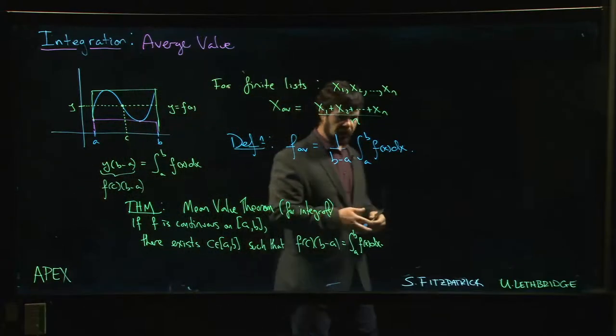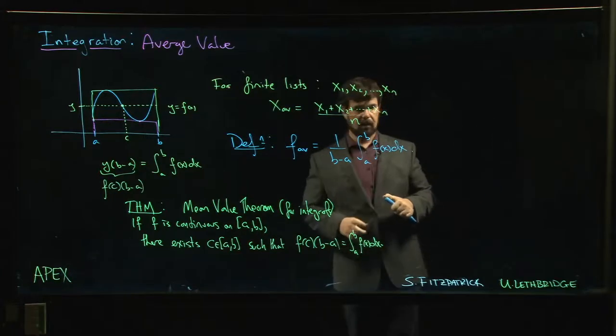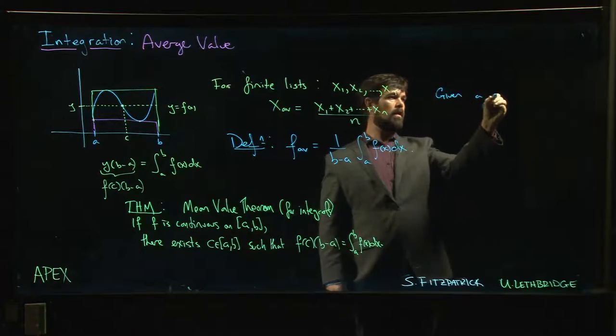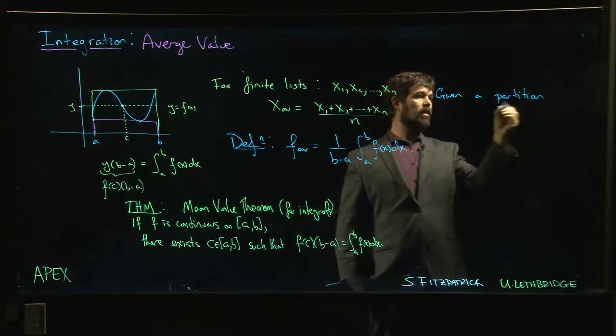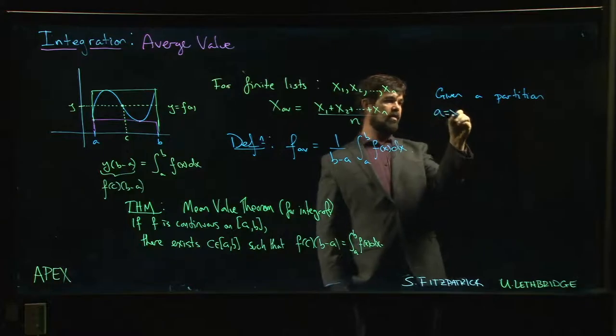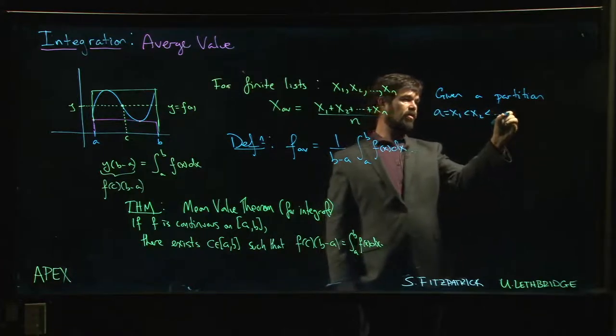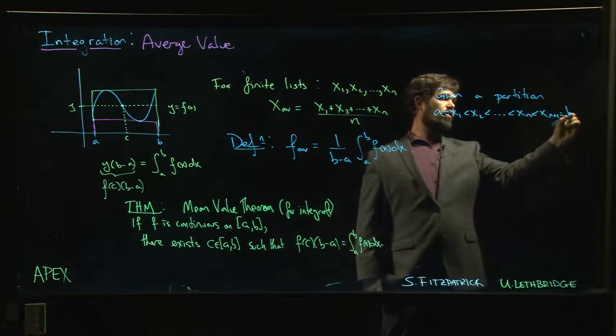Another way to think about this is - if you had your partition, think about Riemann sums for a second. So if you have a partition: a = x_0 < x_1 < x_2 < x_3 and so on down to x_{n+1} which is our b...